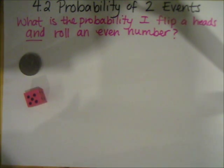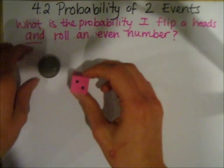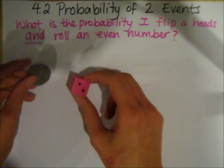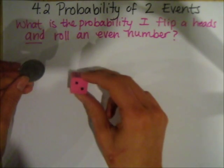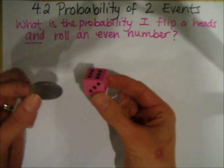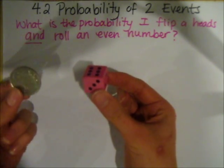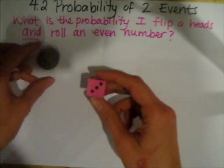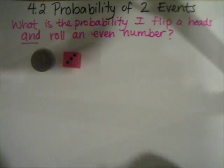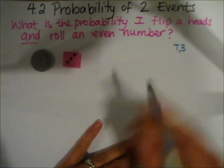In order to work this out, we need to think about all of the different outcomes — we need to think about what our sample space is. This is a bit harder because we've got six outcomes on our dice and two outcomes on the coin. I could have things like tails and a three, or tails and a five.